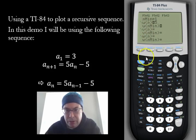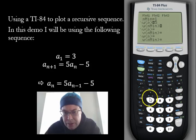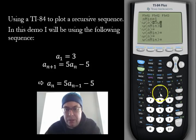So we need to—we're calling this u, so we're going to click second, and under here above 7, you see the letter u. And then we need to put in the parentheses.